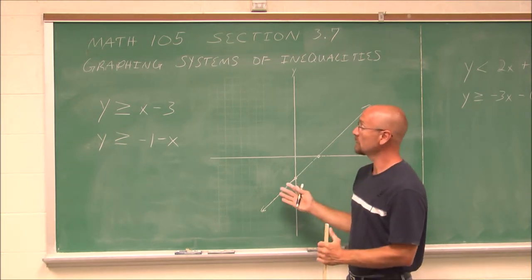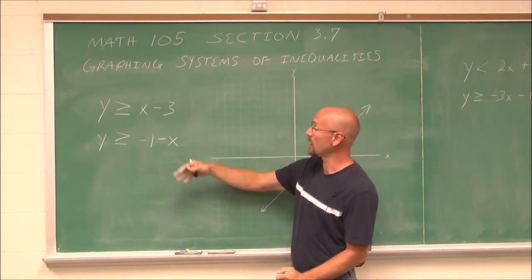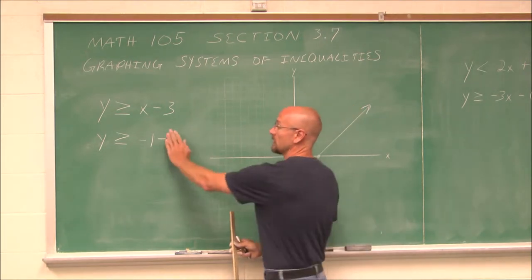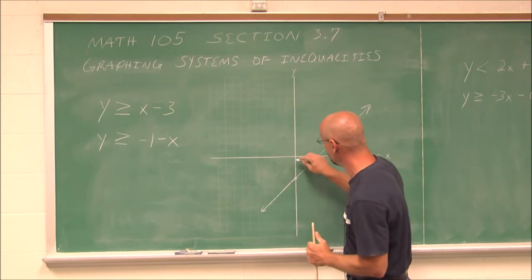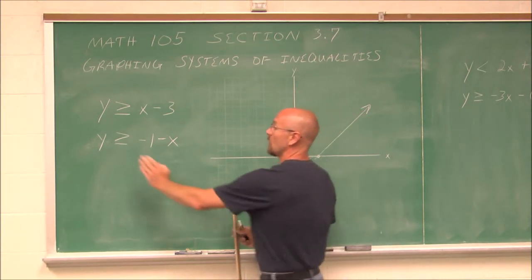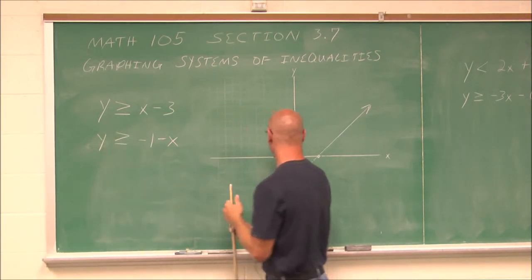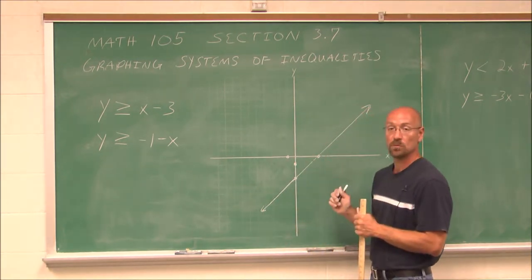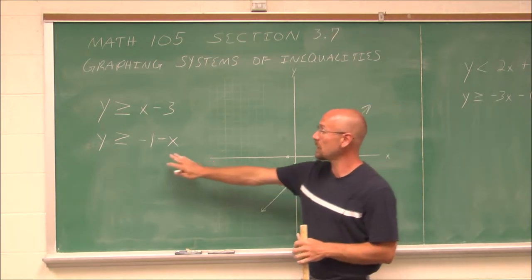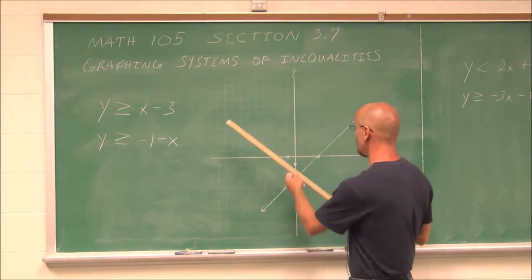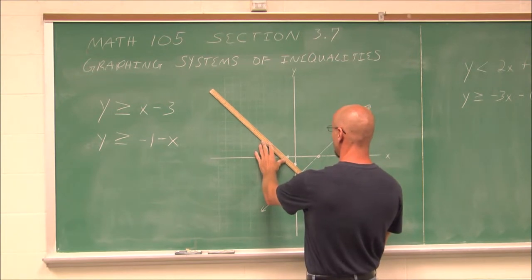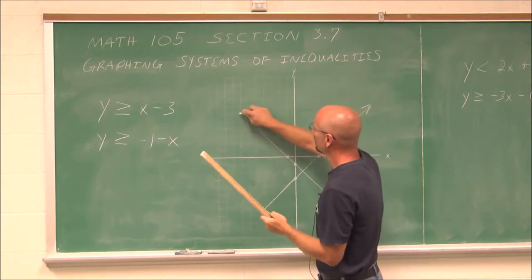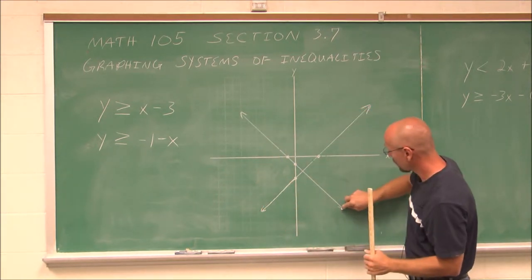Now that we have the first inequality graphed, we're going to graph the next linear inequality. I'm going to do the same thing: when x is 0, y would be negative 1, and when y is 0, x would be negative 1. Now that I have two points and I'm ready to draw that line, I assess the inequality — it's equal to, so I'm going to use a solid line. So in this example, both are solid lines, and we have them both graphed on the same Cartesian plane.